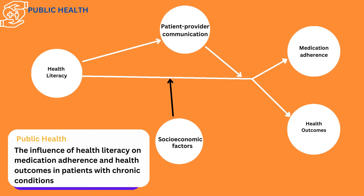In this public health study, we evaluate the influence of health literacy on medication adherence and health outcomes in chronic conditions. We also investigate the moderating influence of socio-economic characteristics and the mediating role of patient-provider communication. Health literacy is the independent variable, which influences both medication adherence and health outcomes. Patient-provider communication acts as a mediating variable, while socio-economic factors moderate the strength of the relationship between health literacy, medication adherence, and health outcomes.